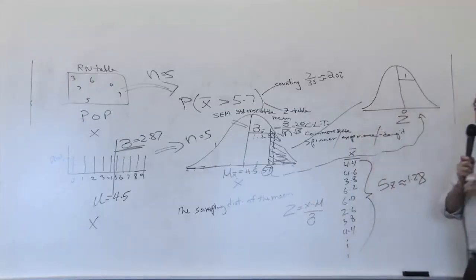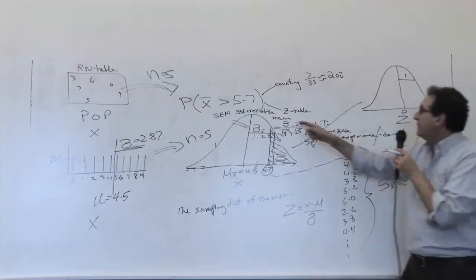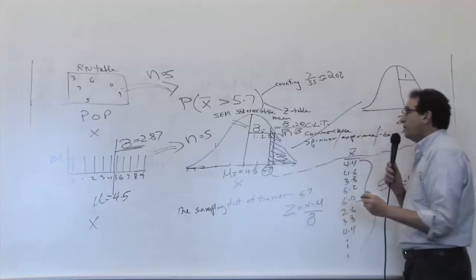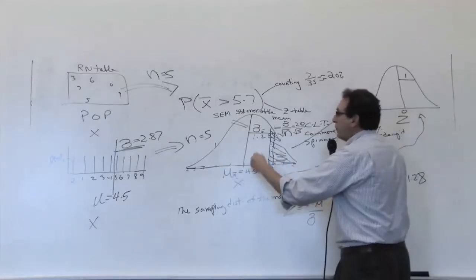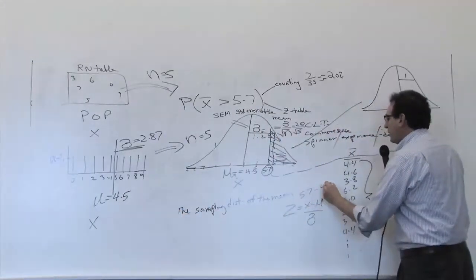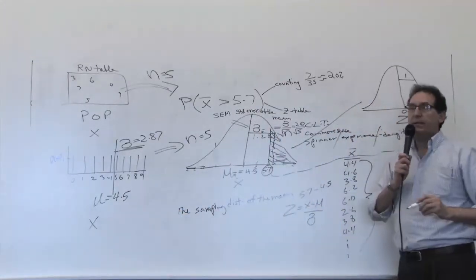Now, X minus mu over sigma would work in this, but what's the X in this case? The X is the boundary of 5.7. What is the mu in this case? The mu is the average of this particular picture, which happens to be the same as the number over here. So it's minus 4.5. What is the sigma in this particular case, Laura?